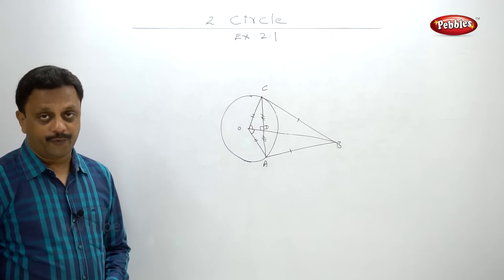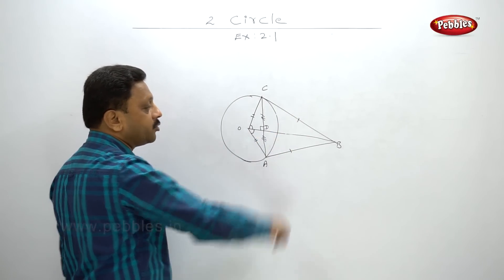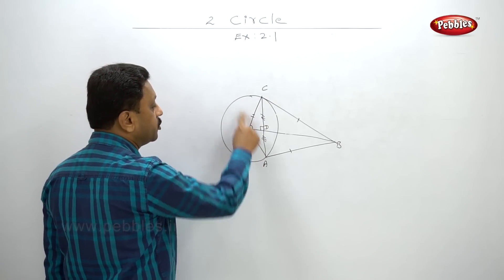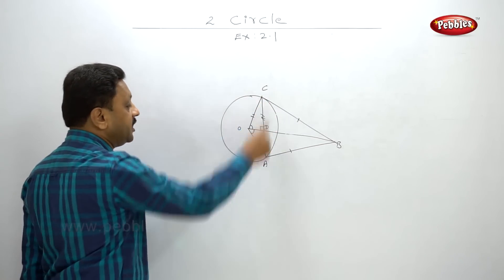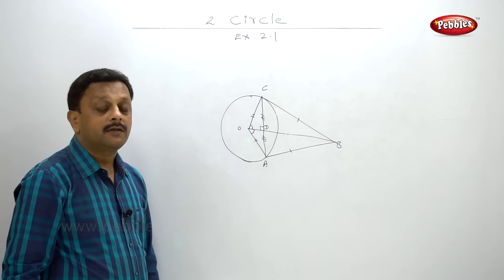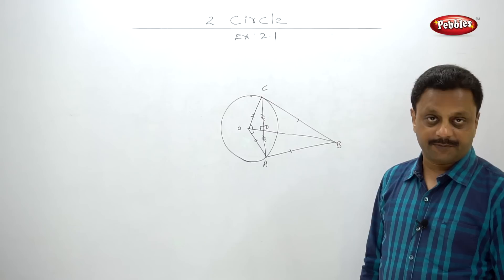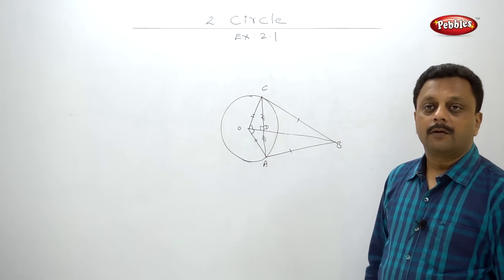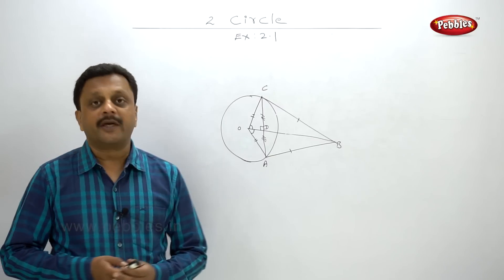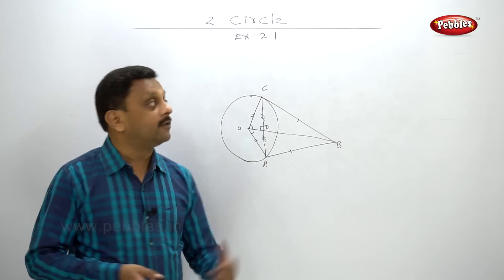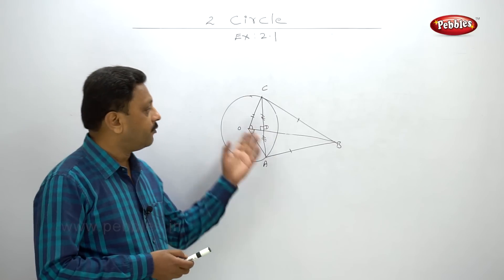There is an alternative and simpler proof: since tangent segments are equal, OC equals OA (radii). So points O and B are equidistant from C and A, which are the endpoints of the segment. Hence by the perpendicular bisector theorem, OB is a perpendicular bisector of AC. Both methods prove the same result.